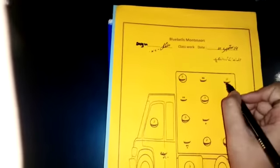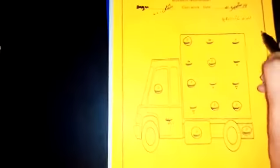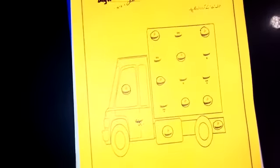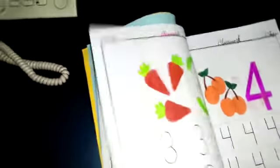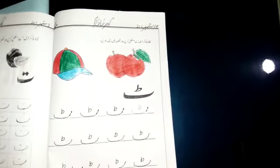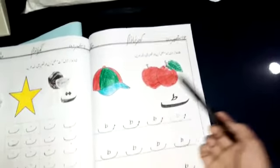Te-truck. Te-truck. Students, wherever there is te, you have to circle it. First look, in the first line te-te-te-te. Students, you have to circle te. And then, what's next? Second line, te-te-te, circle it.